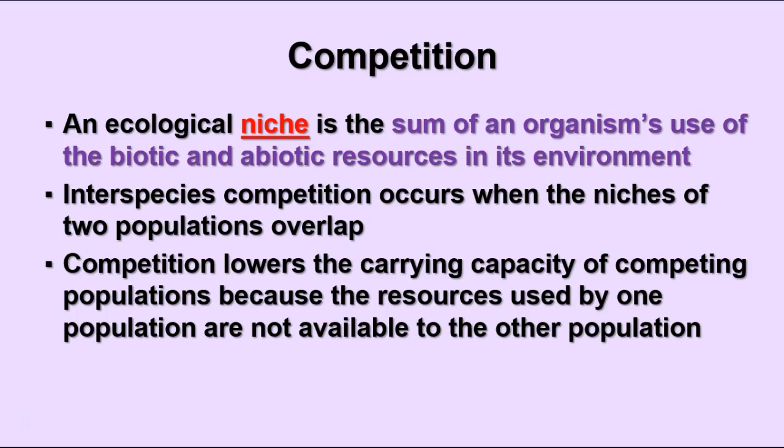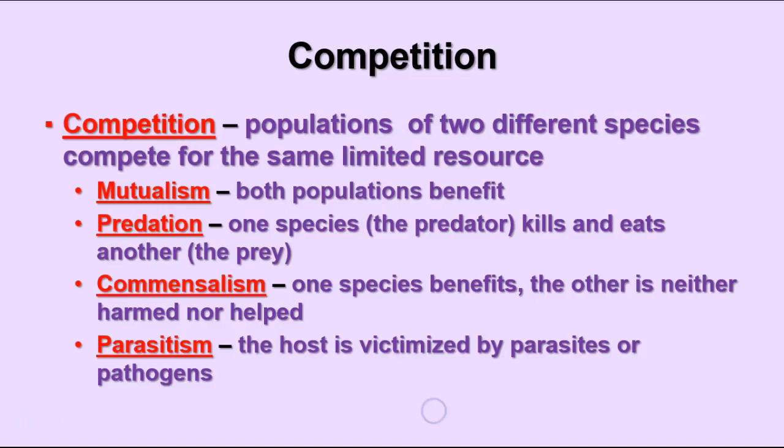One way organisms interact is through competition. An organism's use of the biotic and abiotic resources of its environment is called its niche. The habitat is like the address where the organism lives, and the niche is what it does within that habitat. When the niches of two different populations overlap, competition occurs, which lowers the carrying capacity of both populations because resources can't be available to both at the same time.